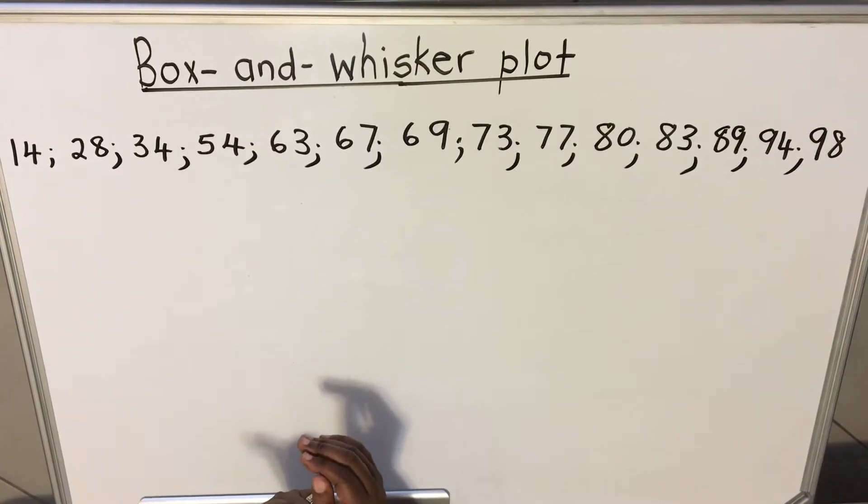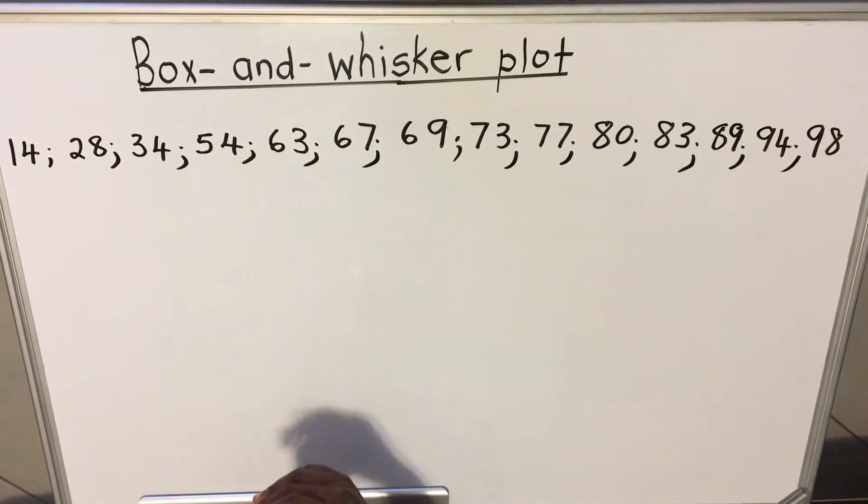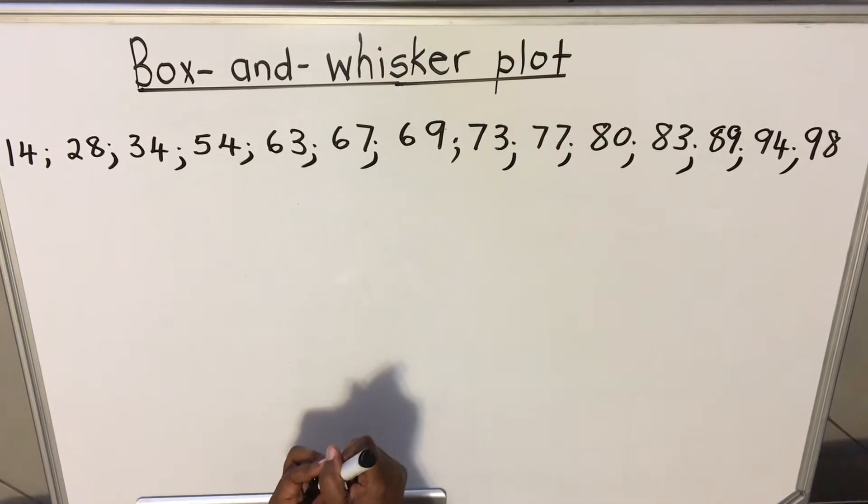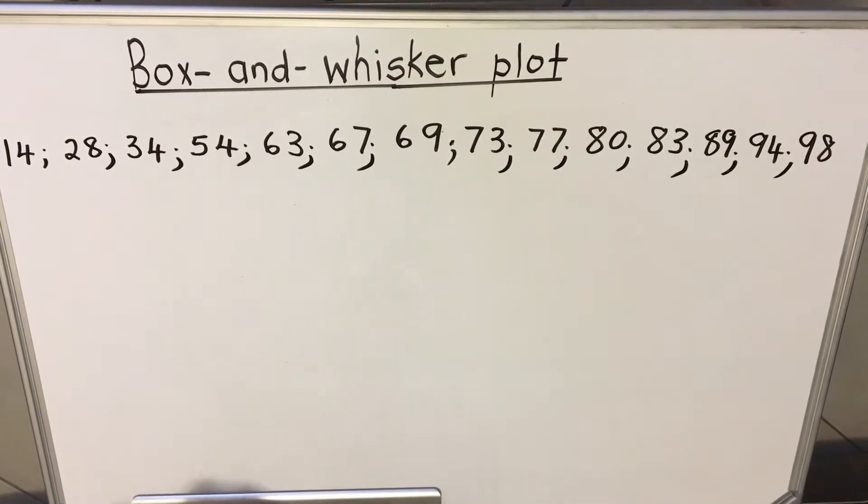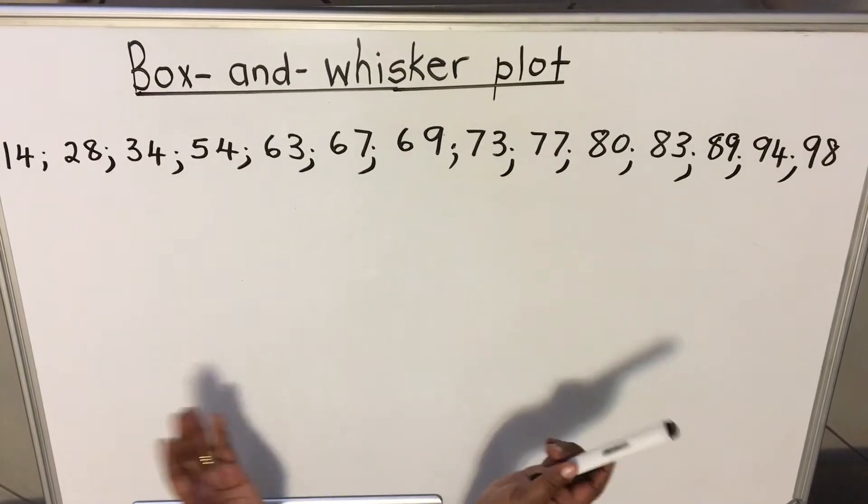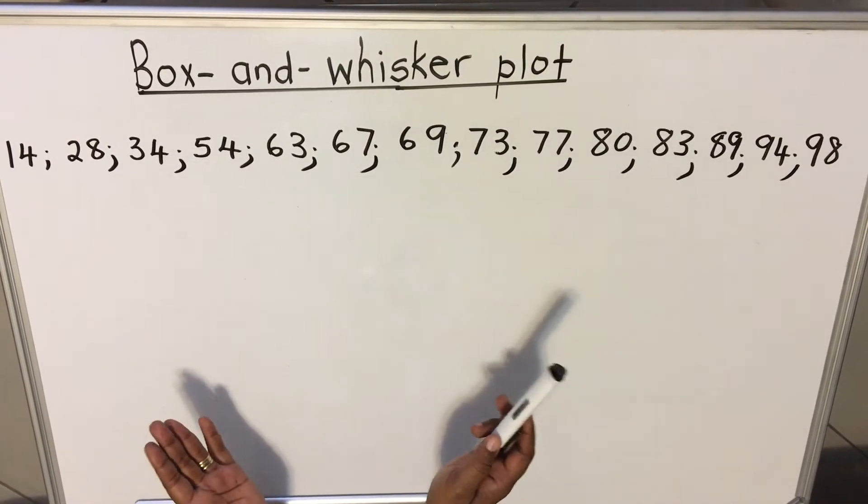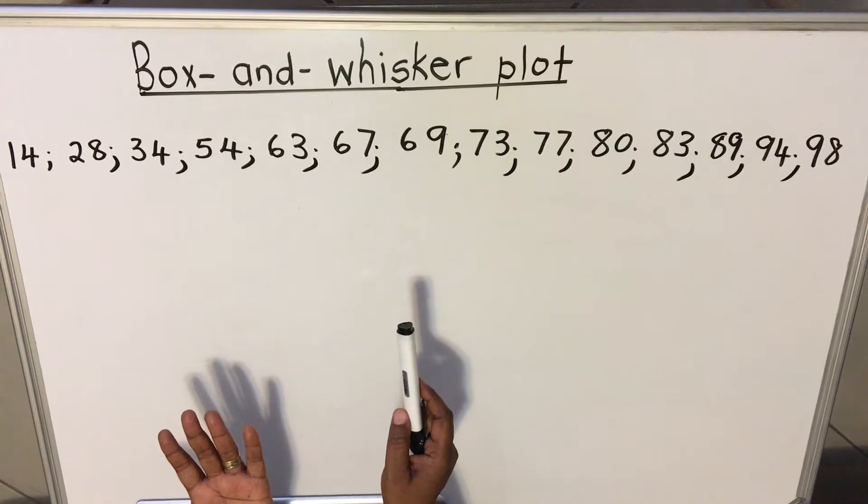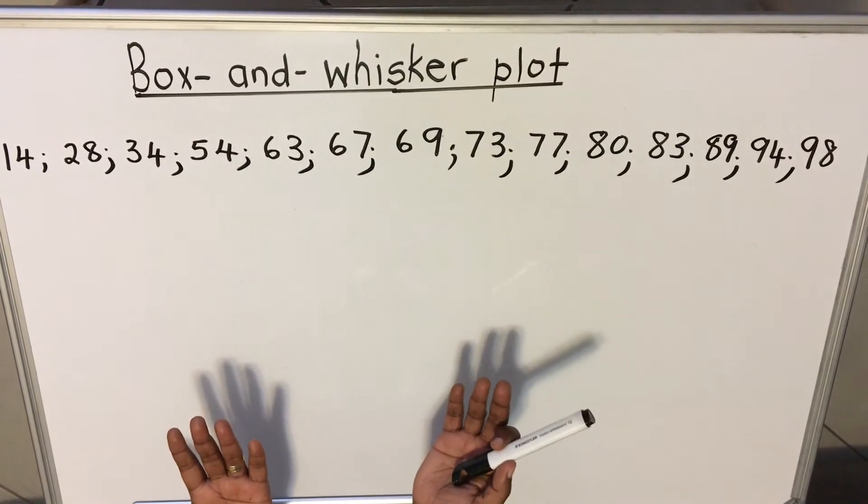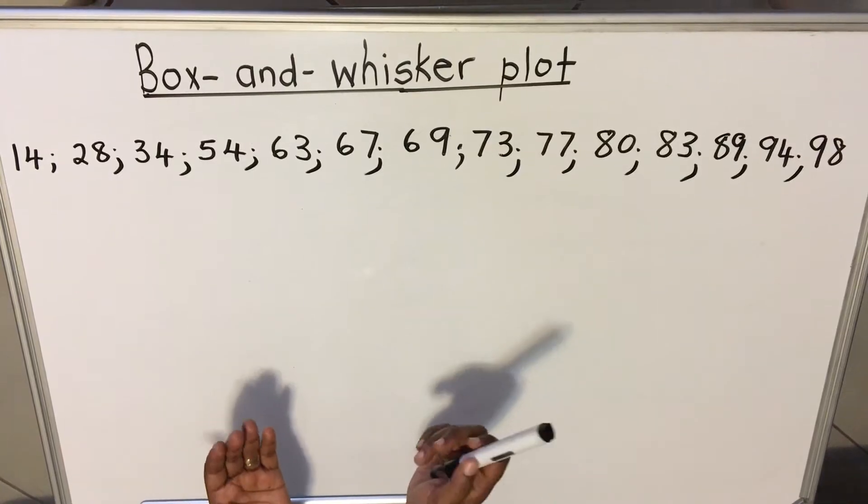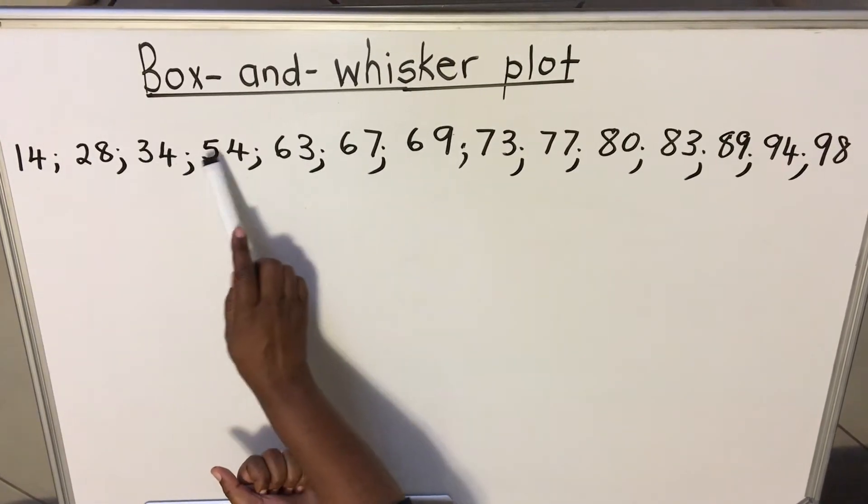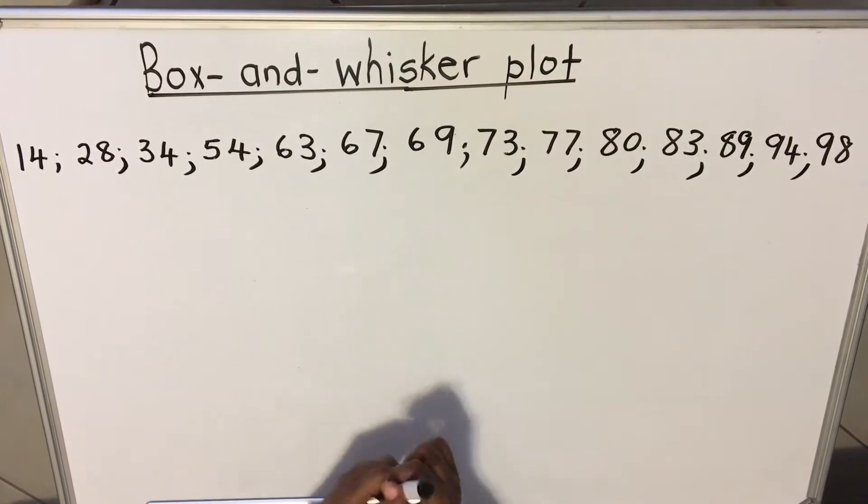Let's see our data here. These are the marks for the grade 11 class. This is a small class because there are so few, and the total number is 14. So it means you'll have seven on one side and seven on the other side. So your median will be between the seventh and the eighth. Let's see: one, two, three, four, five, six, seven.